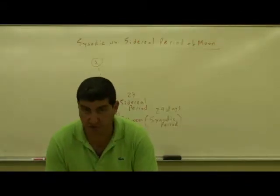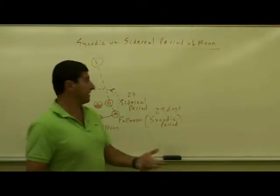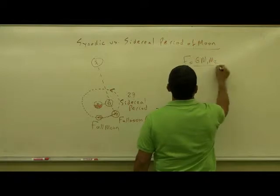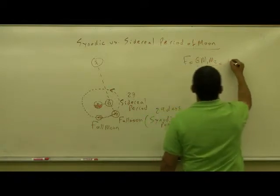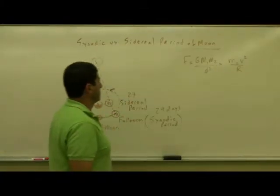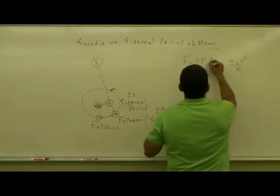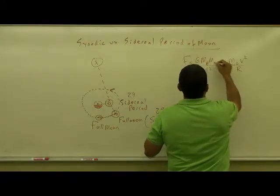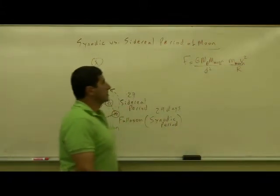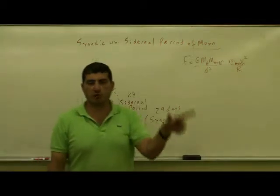So let's first show you the 27 days. Where does that come from? Well, that comes from basically the gravitation force F equals GM1M2 over distance squared is equal to M2V squared over R. So let's call this one the mass of the Earth, mass of Moon, and then this is mass of Moon. So the force of gravity of the Earth on the Moon is what causes the Moon to go around the Earth.